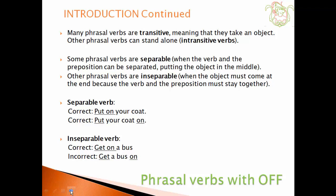Some phrasal verbs are separable, which is when the verb and the preposition can be separated, putting the object in the middle. Other phrasal verbs are inseparable, which is when the object must come at the end, because the verb and preposition must stay together. An example of a separable verb would be 'put on your coat', which is the correct way to say it, but it would equally be correct to say 'put your coat on'.